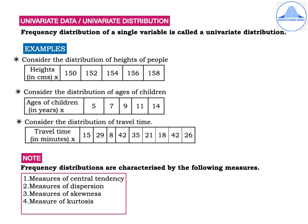Let's consider three examples. The first being the distribution of heights of people. Here heights is considered to be a variable and heights in centimeters of five persons are given which is denoted by small x and the values are 150, 152, 154, 156 and 158.